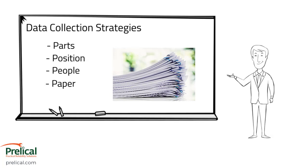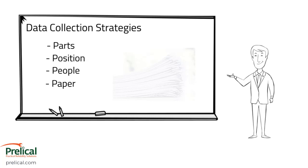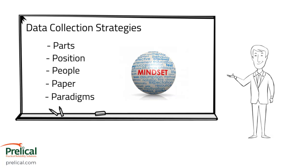Paper information could be shift logs or notes left from one shift to the next, paper schedules, or printed work orders. Don't get too caught up in whether something is positional or paper information — these categories just help you think through the data you need to solve the problem. Today a lot of data is digital, so think of it as anything that's been logged somewhere that you need to review.